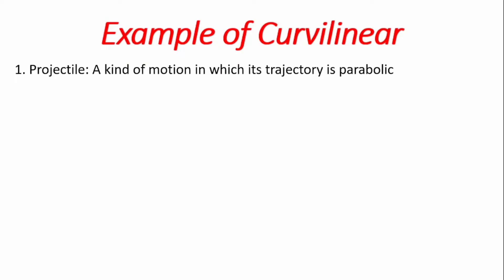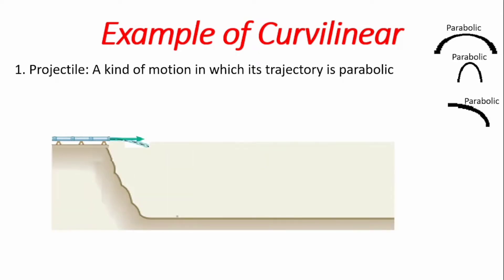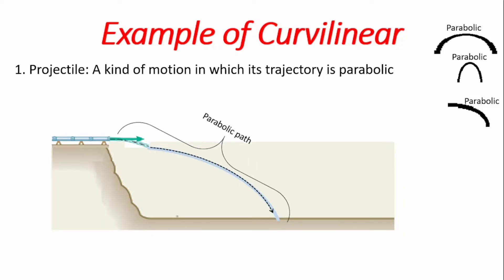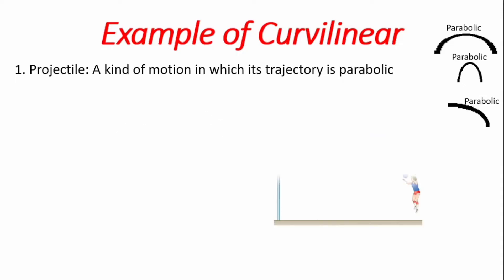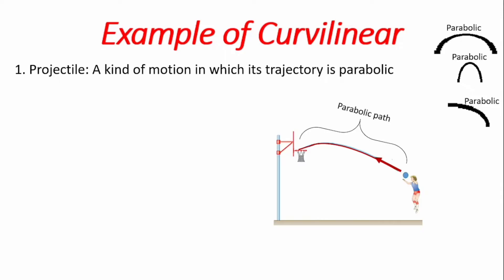There are different examples of curvilinear motion. For example, we have projectile motion, which is a kind of motion in which the trajectory is parabolic. An example is water being poured from a pipe down into a valley such that the path the water takes is parabolic. It could also be a ball thrown into a basket such that the path the ball follows is parabolic — such motion is projectile.